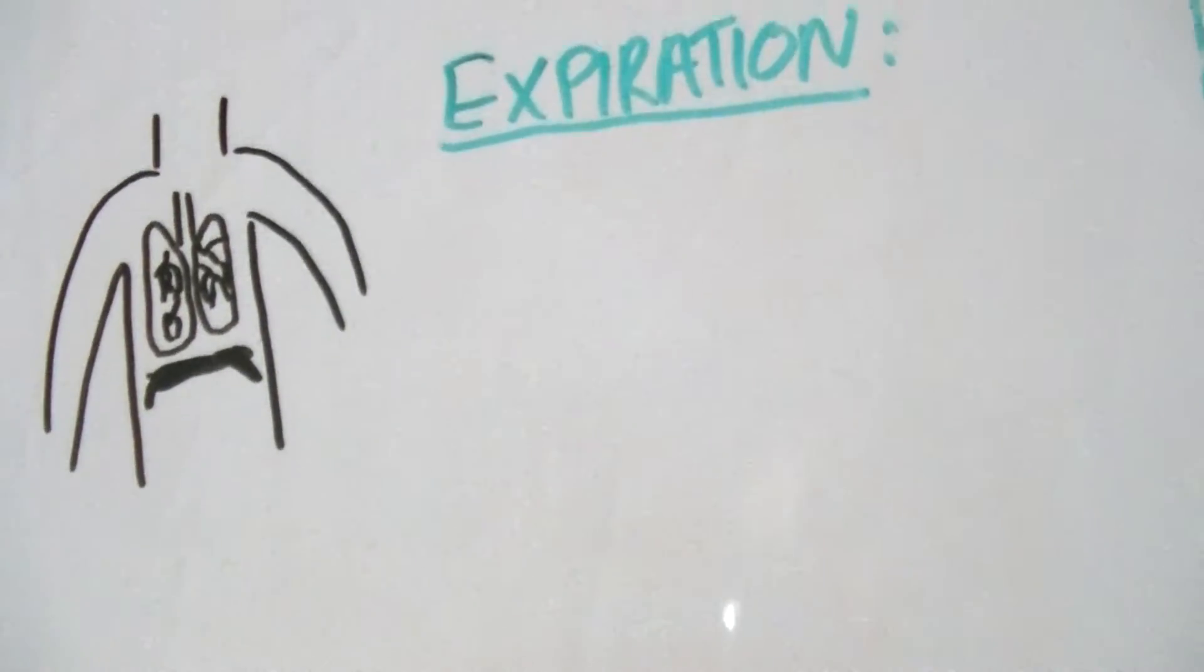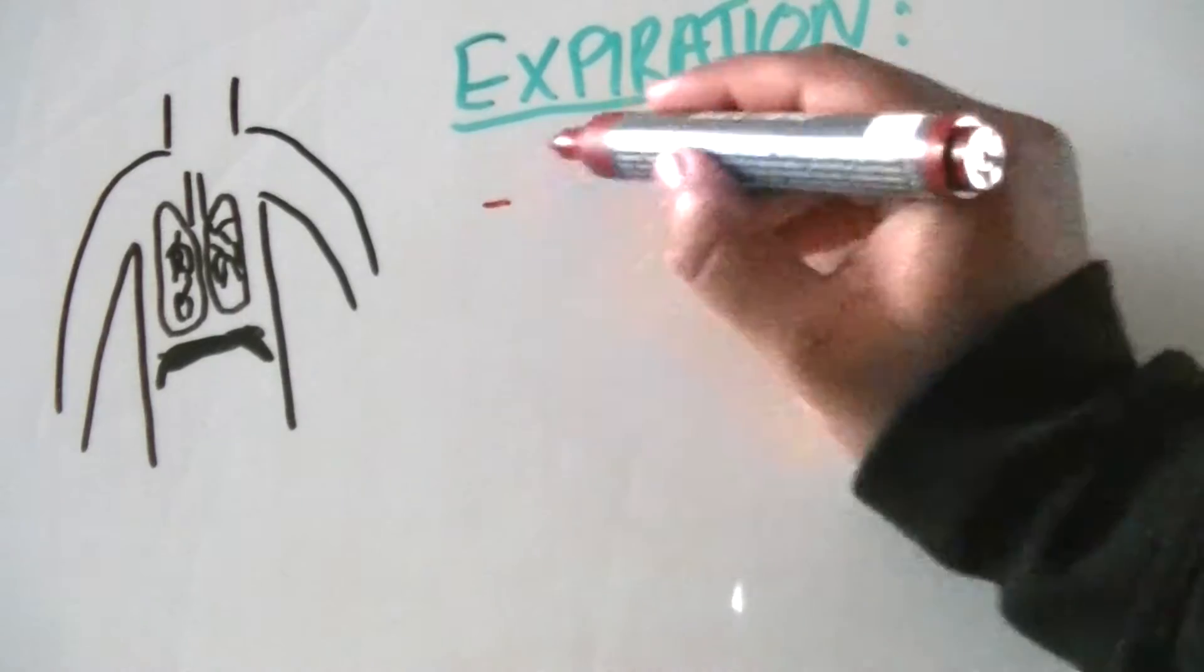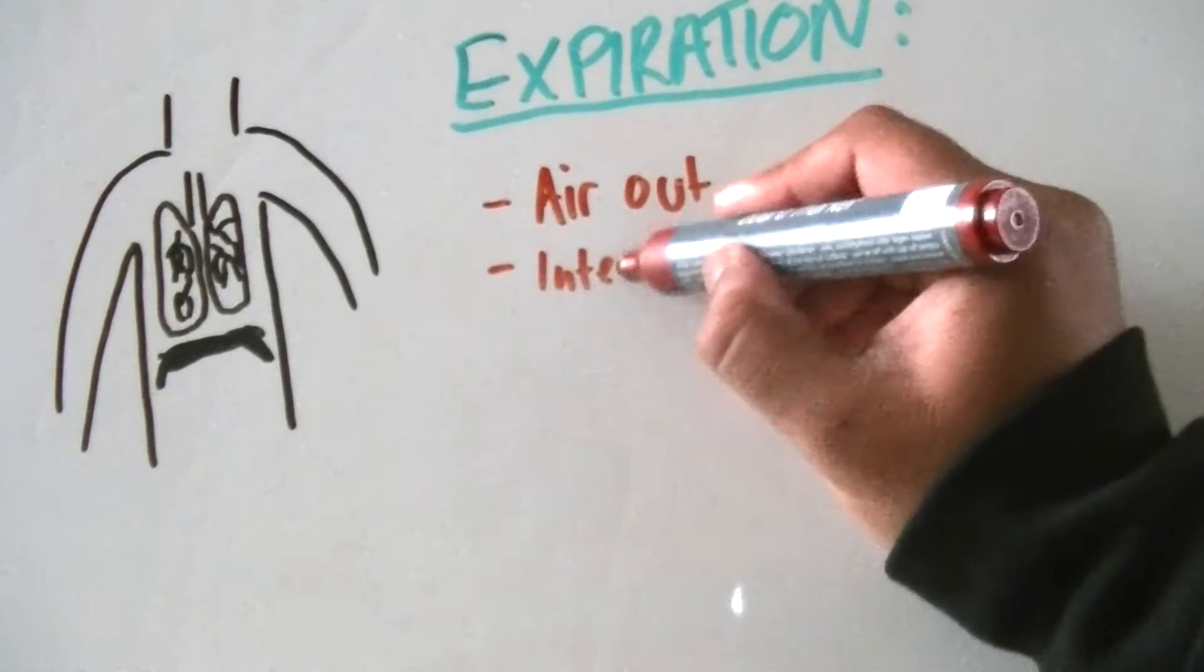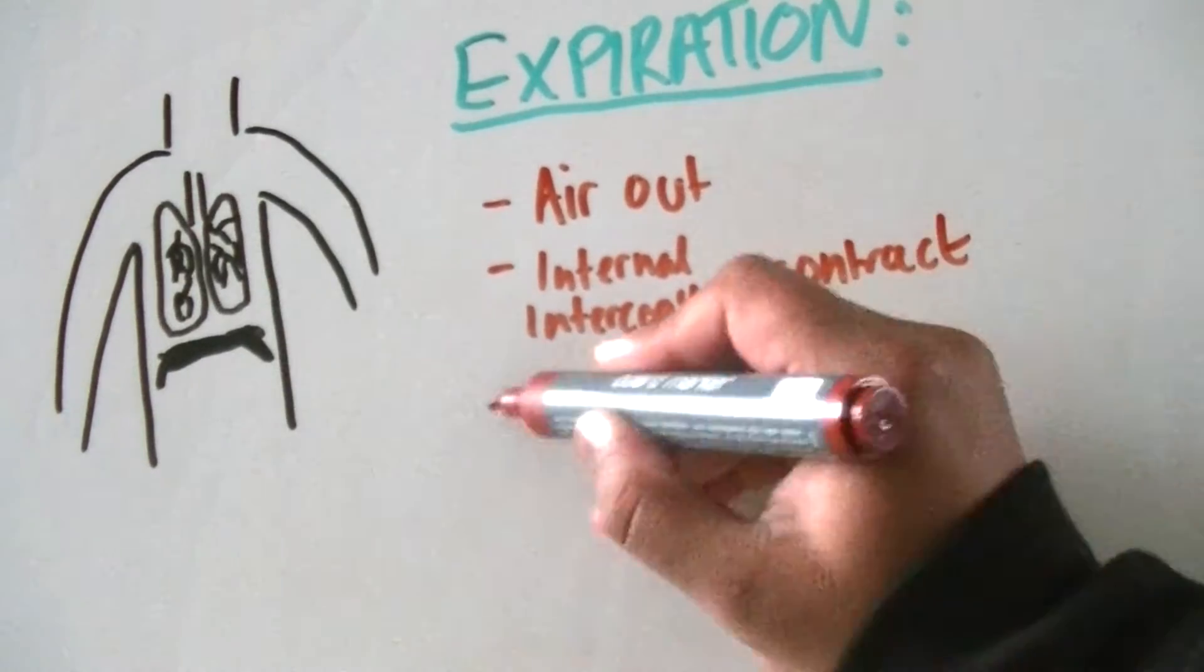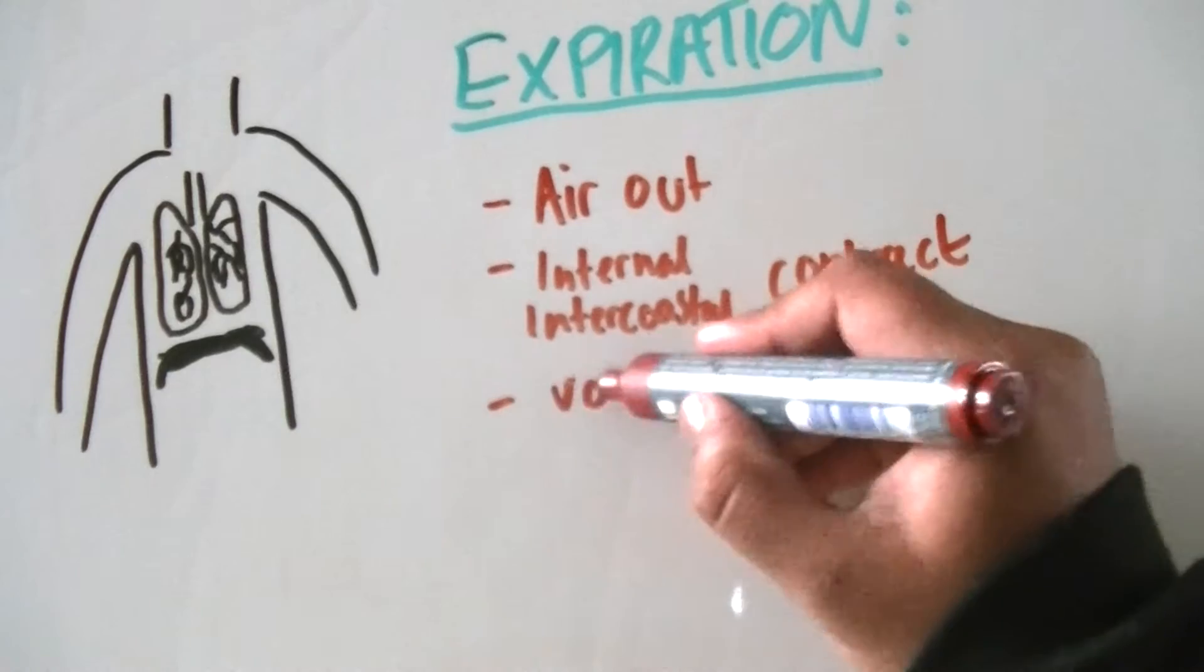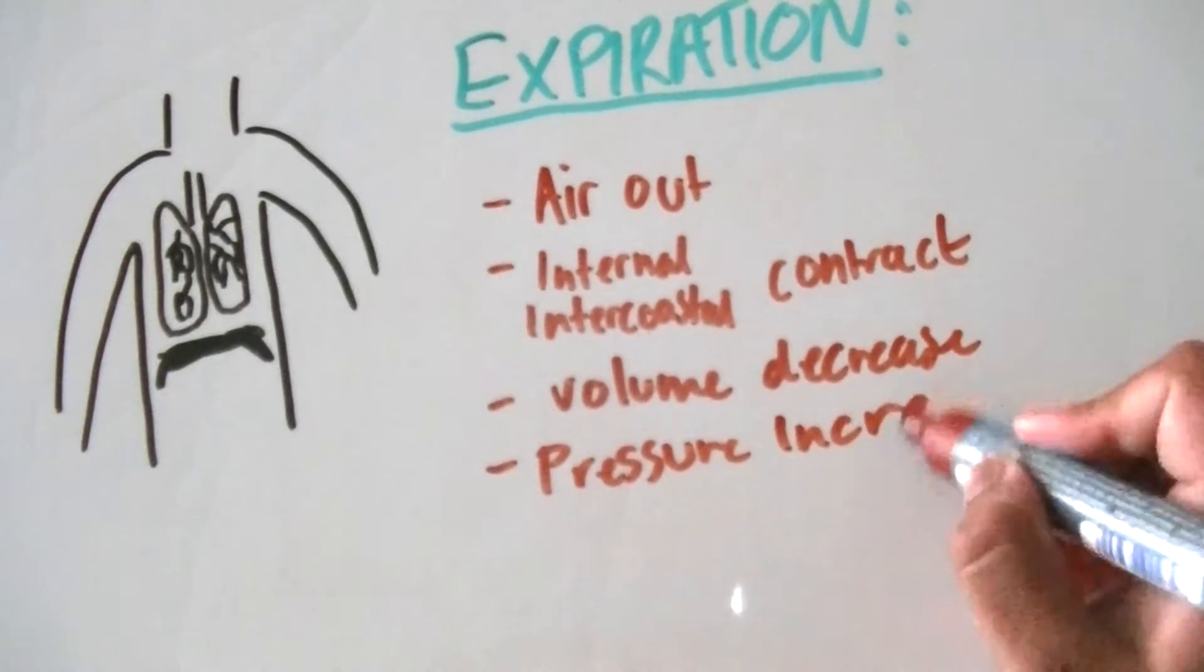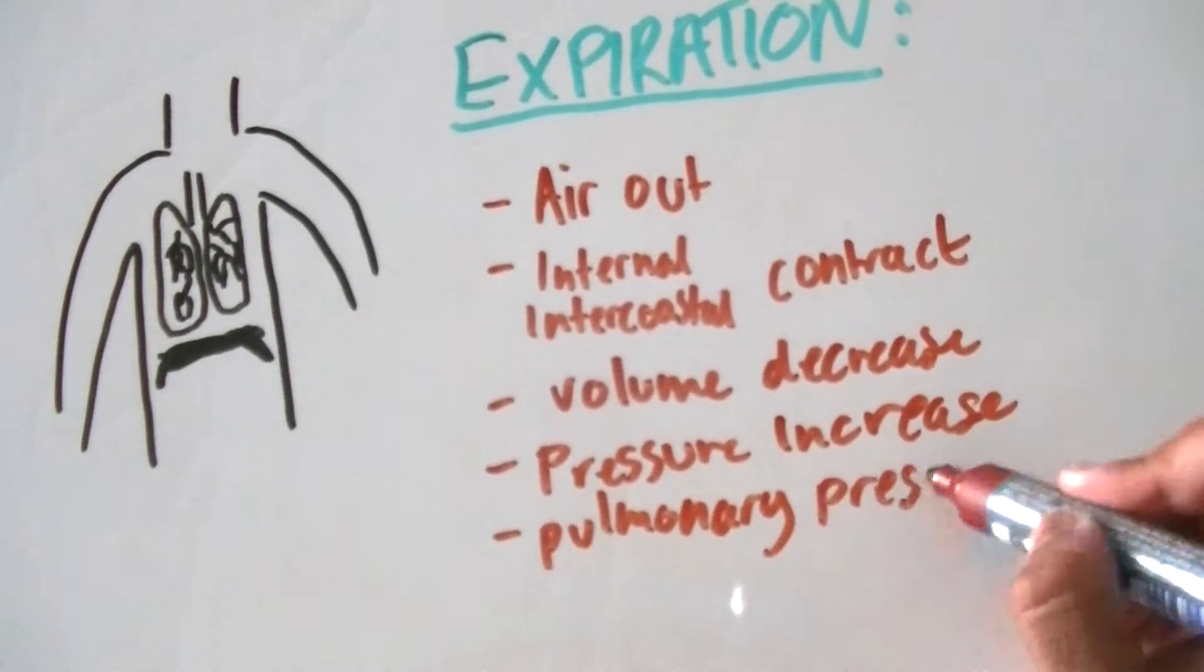Then the decreased volume results in an increase in pressure in the lungs. This is because pressure and volume are inversely proportional to each other. Then the pulmonary pressure is now greater than the atmospheric pressure, so air is forced out of the lungs down the pressure gradient.